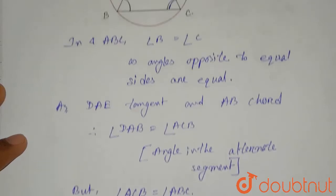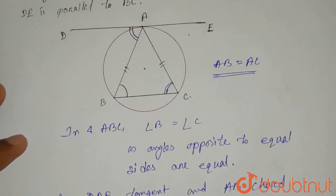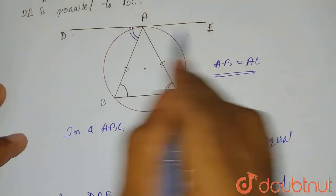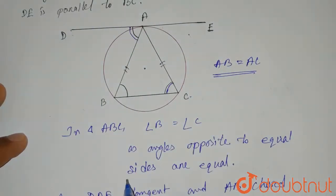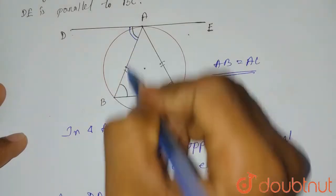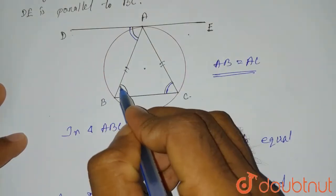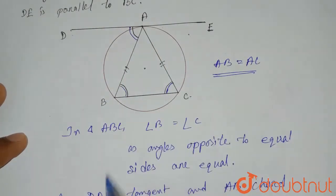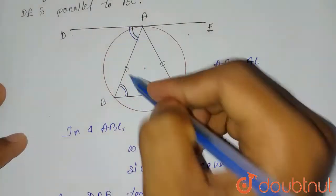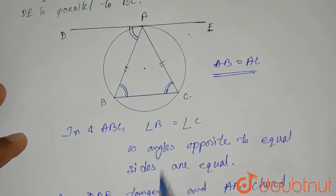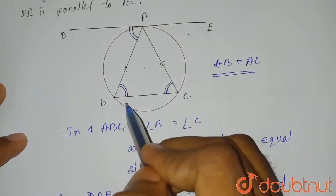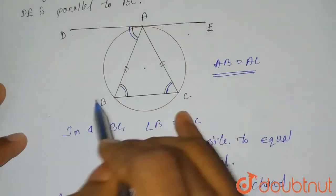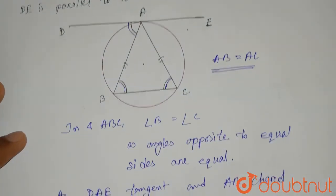Now we can see that these are the two lines DAE and BC. AB is the transversal line, and we have got two interior alternate angles that are equal. When these two alternate angles are equal, we can say that these two lines are parallel.